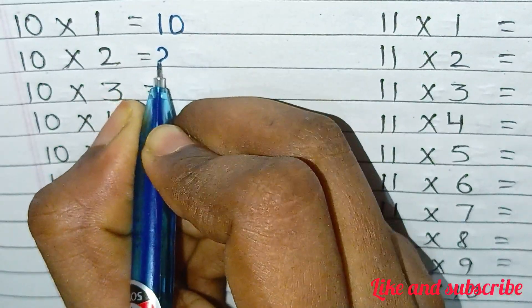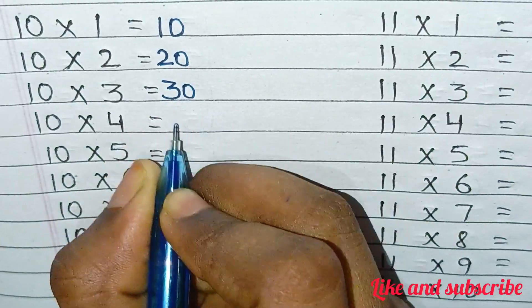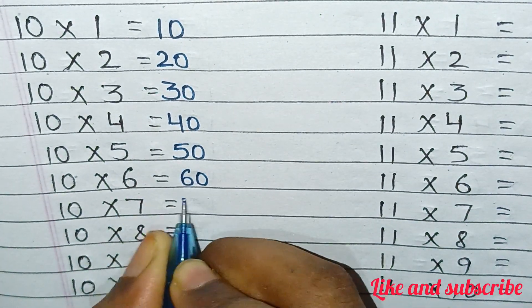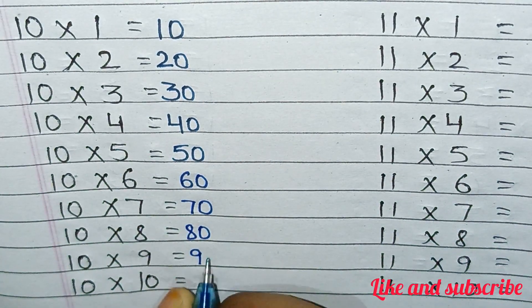10×1=10, 10×2=20, 10×3=30, 10×4=40, 10×5=50, 10×6=60, 10×7=70, 10×8=80, 10×9=90.